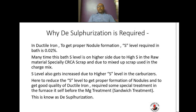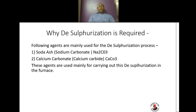The following agents are mainly used for the desulphurization process: one is soda ash, that is sodium carbonate (Na₂CO₃), and the second is calcium carbide (CaC₂). These agents are mainly used for carrying out desulphurization in the furnace.